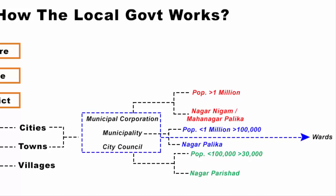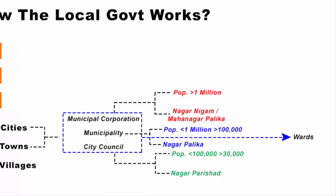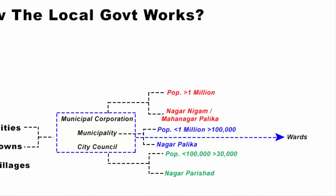As citizens of India, we take part in municipal elections where we elect someone called a corporator. This corporator is chosen by direct election for a term of five years. These corporators belong to each ward and are elected by us to solve and present our local issues in these civic authorities by forming a ward committee.